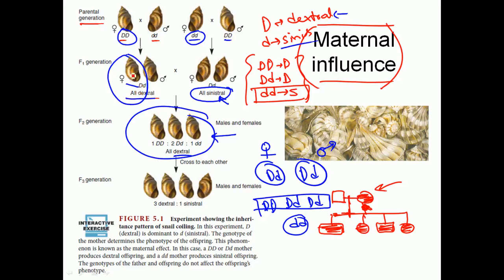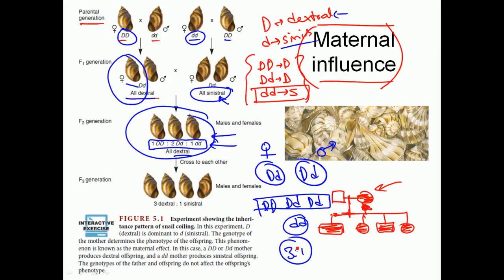If you take the dextral mother from the F1 generation and cross it with a sinistral father, every offspring we get is dextral. The expected Mendelian phenotypic ratio should be 3 dextral to 1 sinistral, but that ratio is not maintained here. Everyone in the F2 generation has dextral coiling.